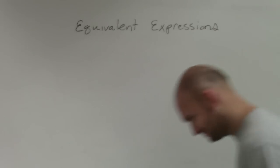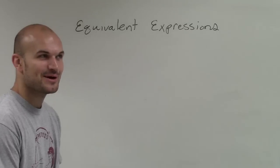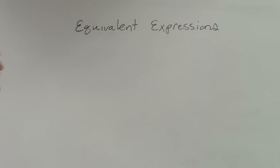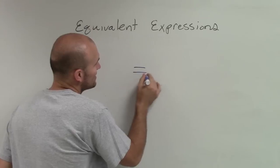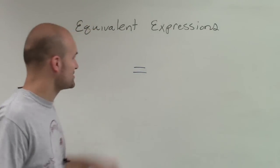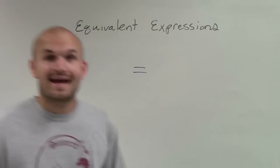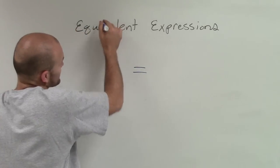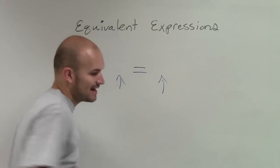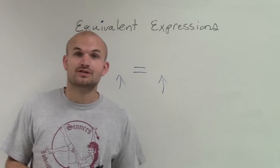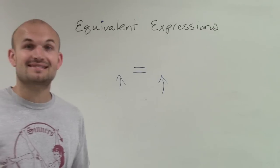Equivalent expressions. Pretty much we can represent equivalent expressions by using one of these little signs that kind of looks like little railroad tracks, which we call an equal sign. When dealing with this, equivalent expressions pretty much mean that this side equals that side, meaning that two expressions — algebraic or numeric — are going to have exactly the same value.